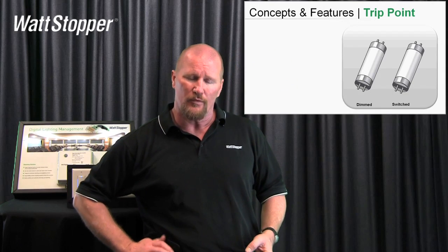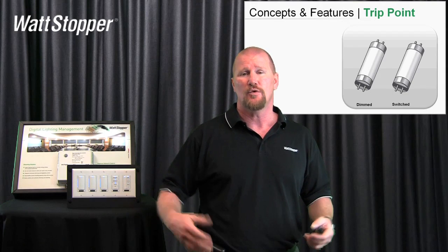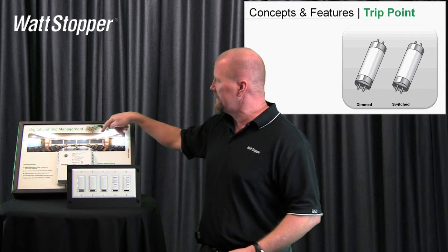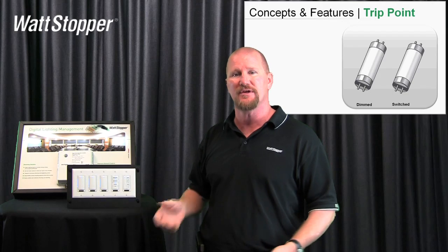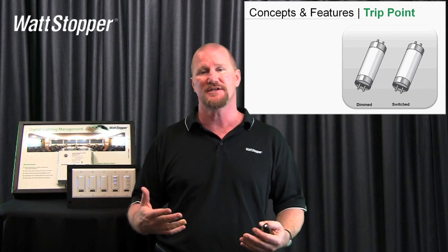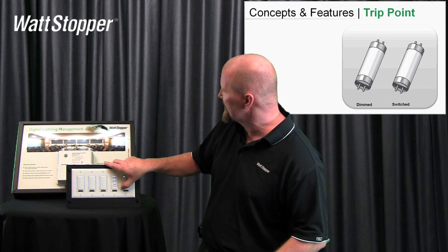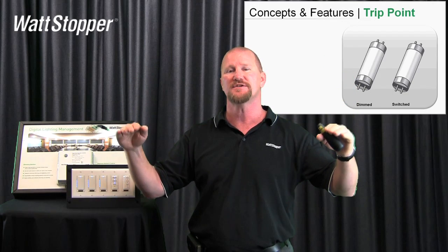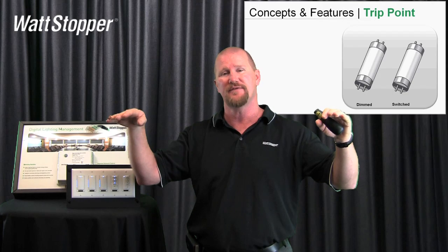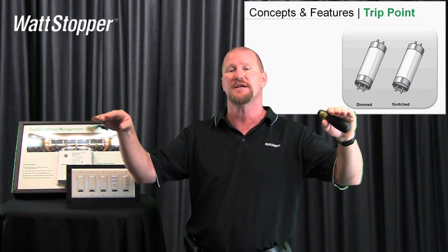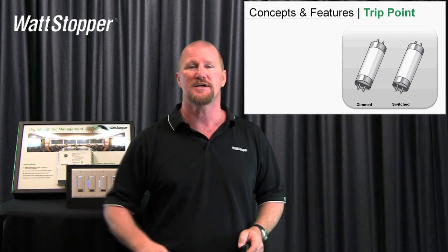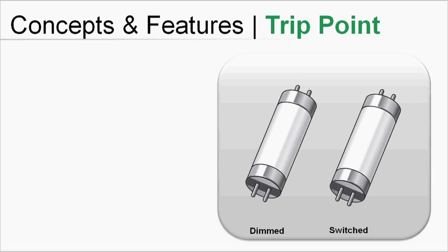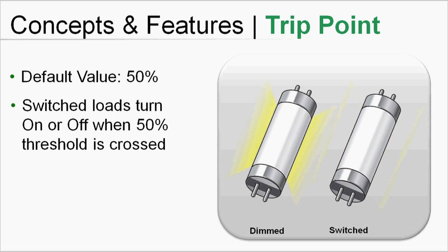The reason you'd want to adjust trip point is to choose when in the ramp or fade you want that switched light to turn off. In my conference room example, if the cove light accounts for about 80% of the room's light and doesn't turn off until I dim all the way to the bottom, I wouldn't have much effective dimming. So as I ramp down, the down lights and sconces dim, and when they reach 50%, the cove light switches off — leaving me the bottom 50% of the down lights to adjust. On the way up, when they reach 50%, the cove light turns back on. The important thing is it's totally adjustable and customizable by you.